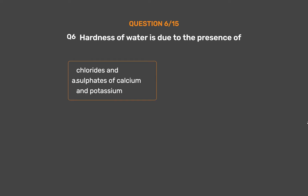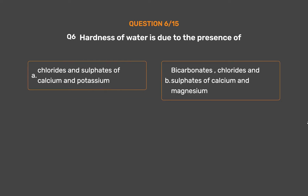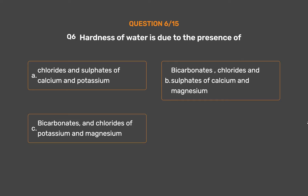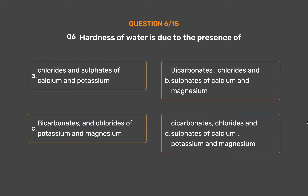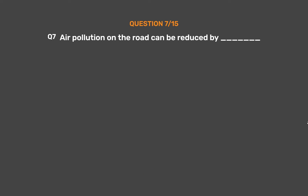Question number six: Hardness of water is due to the presence of — option A: chlorides and sulfates of calcium and potassium, option B: bicarbonates, chlorides and sulfates of calcium and magnesium, option C: bicarbonates and chlorides of potassium and magnesium, option D: carbonates, chlorides and sulfates of calcium, potassium and magnesium. The correct answer is option B: bicarbonates, chlorides and sulfates of calcium and magnesium.